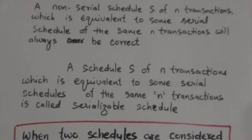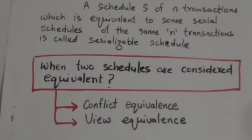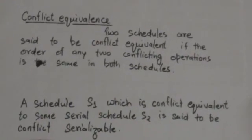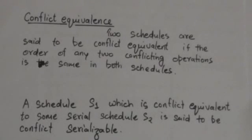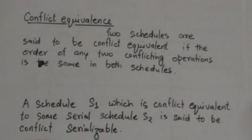A schedule of N transactions which is equivalent to some serial schedule of the same N transactions is called a serializable schedule. Now, when two schedules are considered equivalent, there are two ways by which two schedules can be equivalent: one is conflict equivalence and another one is view equivalence. In this tutorial we will study about conflict equivalence.